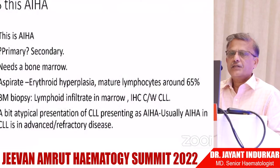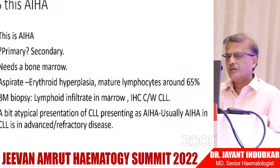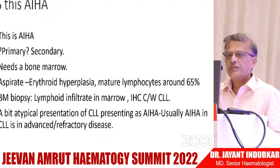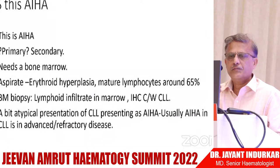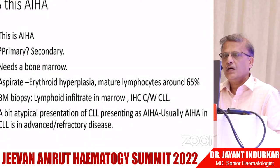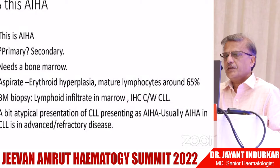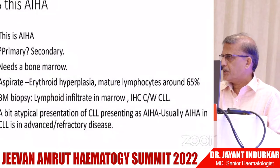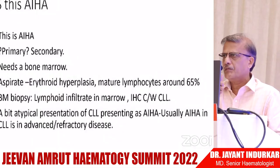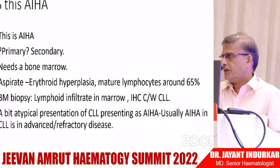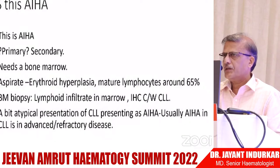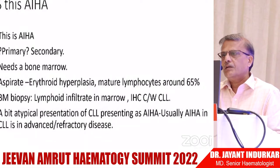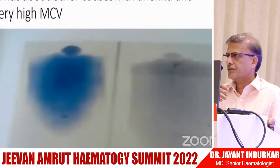So is this AIHA, and if so, is it primary or secondary? This was a 56-year-old gentleman. The bone marrow aspirate showed erythroid hyperplasia and mature lymphocytes; bone marrow biopsy showed CLL, confirmed by flow cytometry. The usual presentation of CLL with AIHA is in advanced stage, but it can present as AIHA at any stage. The bottom line: in Coombs-positive anemia, bone marrow is necessary in most cases. Here you treat the AIHA, not the CLL.